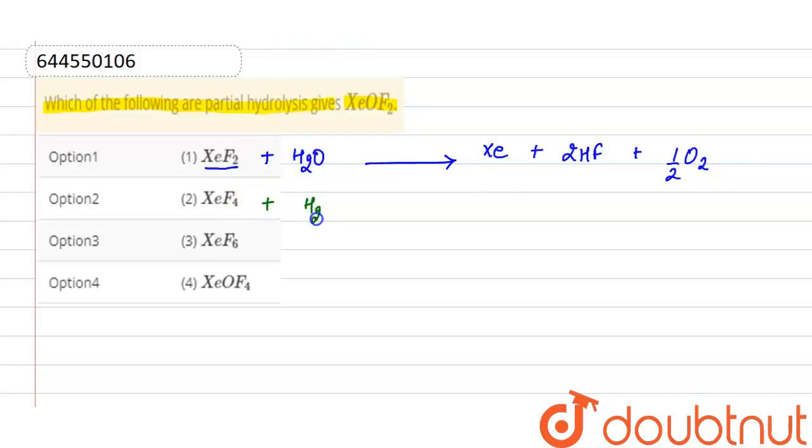partial hydrolysis gives xenon oxydifluoride (XeOF2) plus two hydrogen fluoride. Next, partial hydrolysis of xenon hexafluoride (XeF6) gives xenon